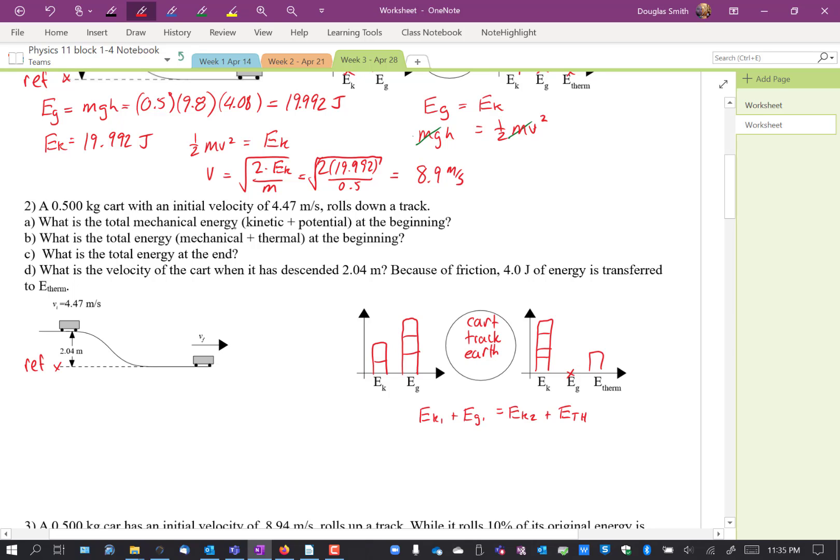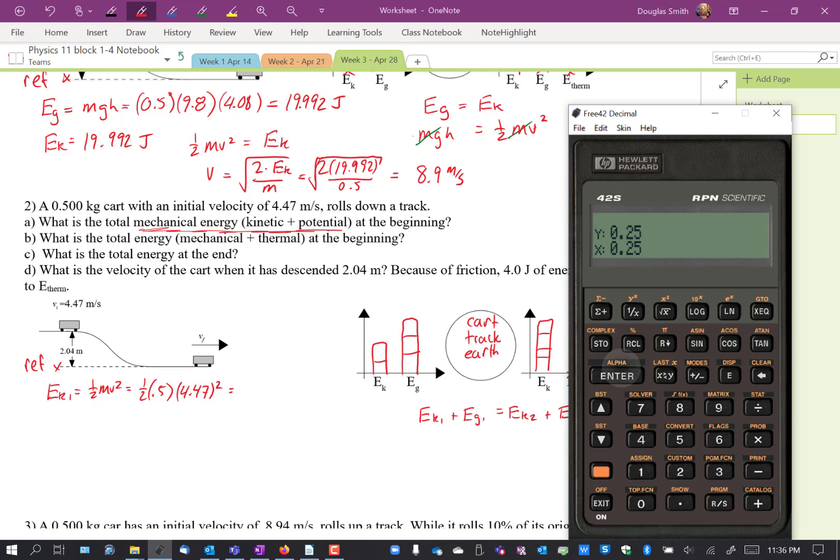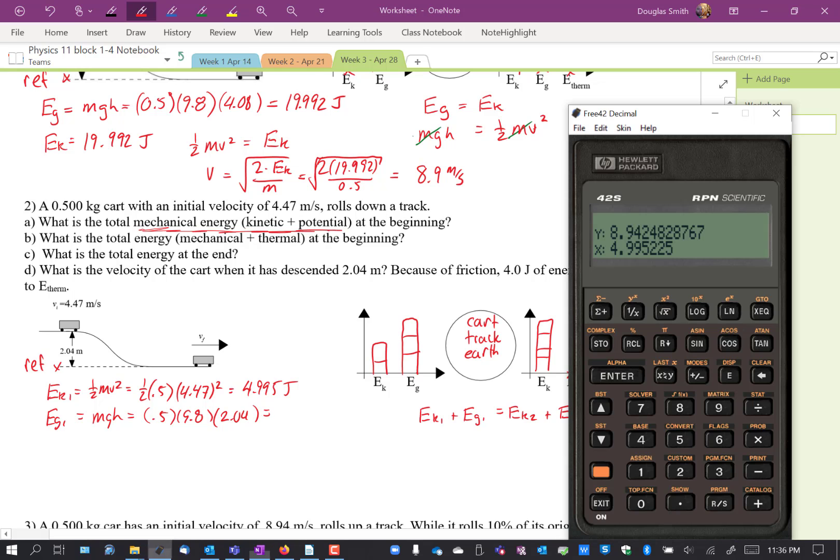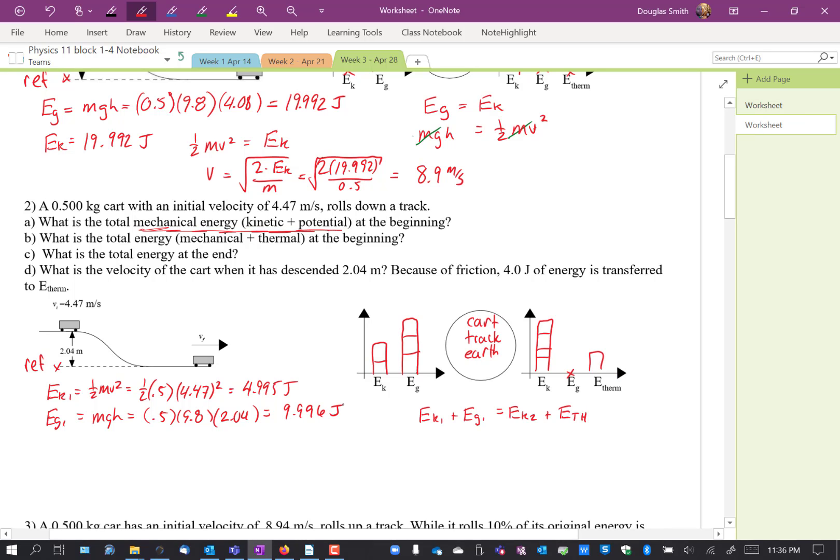All right. First question. What is the total mechanical energy, which is kinetic and potential energy put together? That's what mechanical energy is. So you're expected to know that. That's like a memorization thing at the beginning. Okay, so EK1 is one-half MV squared. One-half times 0.5 times 4.47 squared equals 0.25 times 4.47 squared. That is 4.995 joules. Okay, EG1, MGH, 0.5 times 9.8 times 2.04. So one-half of 9.8 is 4.9, times 2.04, 9.996.